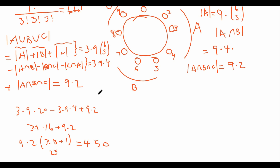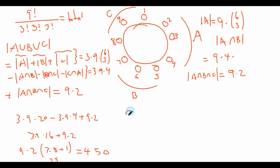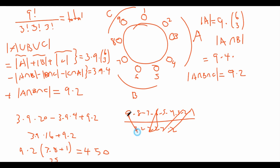The total number of arrangements is 9! / (3! × 3! × 3!). Evaluating: 9! = 362880, and (3!)³ = 216, giving 362880 / 216 = 1680. Alternatively, canceling factors: 9×8×7×6×5×4×3×2×1 over (3×2)×(3×2)×(3×2) simplifies step by step to 3 × 4 × 7 × 5 × 4 = 1680. So the total number of ways is 1680.